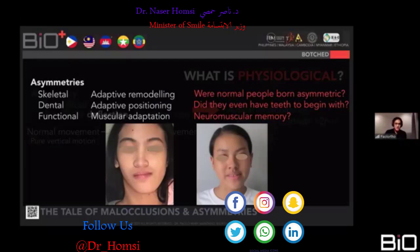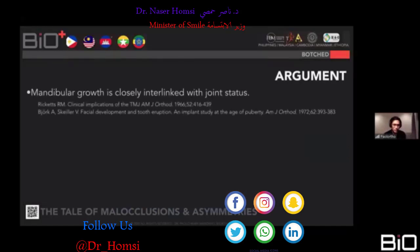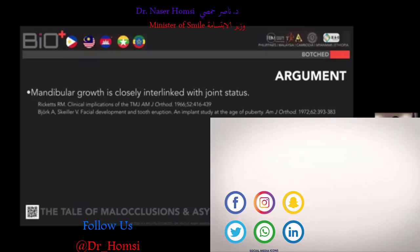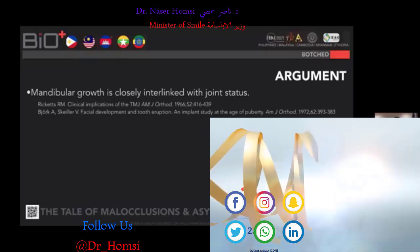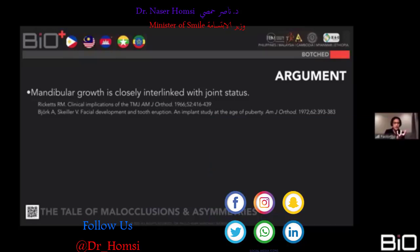Were normal people born with asymmetries? No — I've never seen a baby with a shifted jaw. Babies don't have teeth under normal circumstances. The neuromuscular memory develops normally as kids grow, with normal up-and-down jaw movement. But it gets disrupted during permanent dentition turnover. My argument is that you see asymmetries more because of skeletal adjustment due to occlusal setups. If a malocclusion can cause facial asymmetry, then by fixing the occlusion you can return the jaw to its proper position through adaptive remodeling.